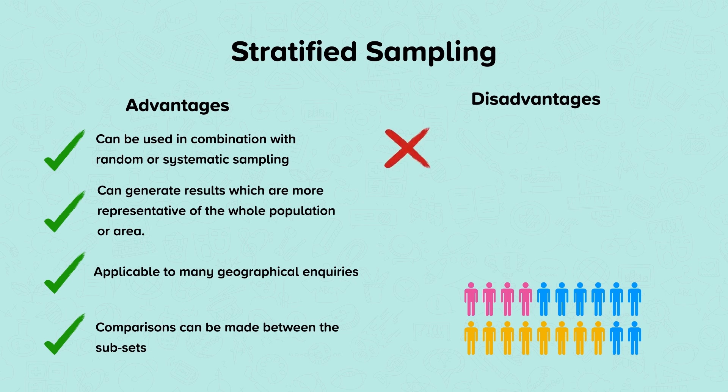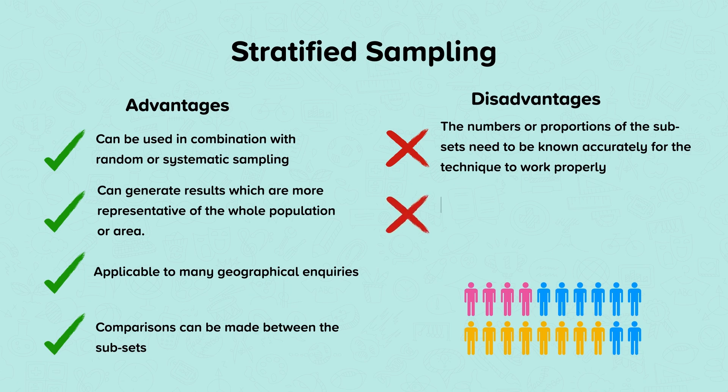Disadvantages are that the numbers or proportions of the subsets need to be known accurately for the technique to work properly. And it can be hard to identify people's age or social background effectively.